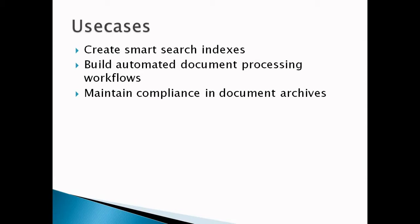Use case two: build automated document processing workflows. Amazon Textract can provide inputs required to automatically process forms without human intervention. For example, banks can automate loan applications using Textract, and HR and medical teams can view their data in an application without human interaction. The information in the document can be used to initiate all necessary background and credit checks to approve a loan, so customers can get instant results rather than waiting several days for manual review and validation.